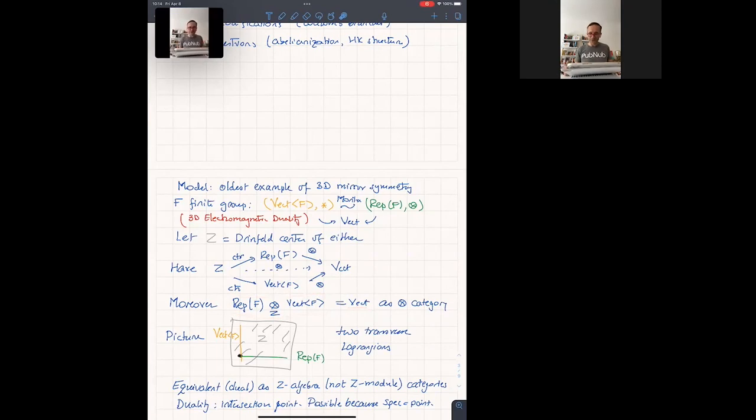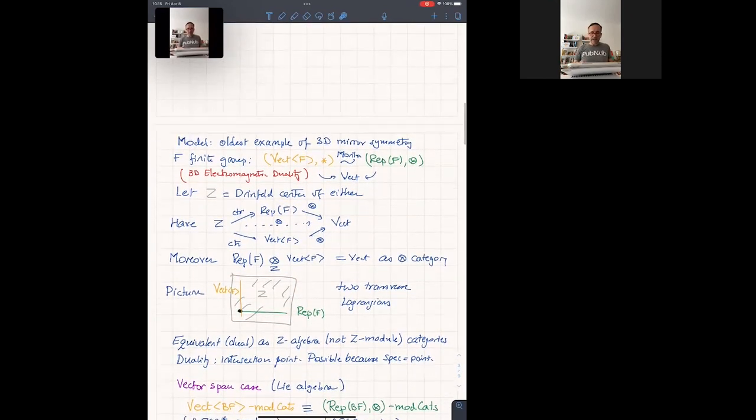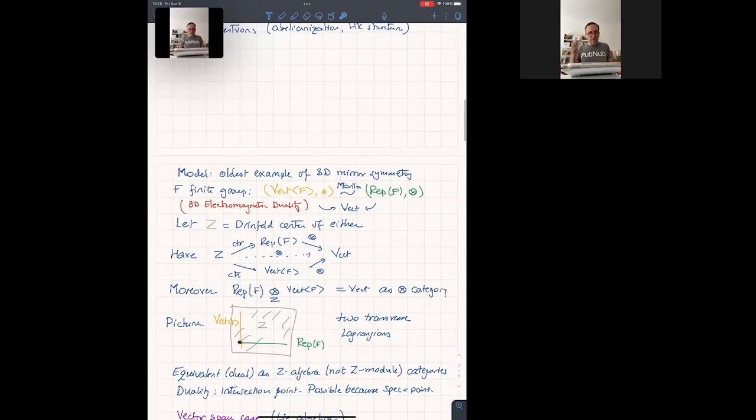So if you want to draw a picture, what you'd be drawing here is spec of the center here, this is gray Z, and then two Lagrangians for the two halves, and they're sitting at the point that's your Vec. And the interesting thing, it takes a while to wrap your head around that, is that these two, green and orange, are equivalent as algebra categories.